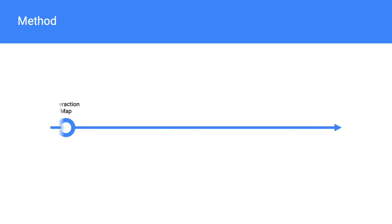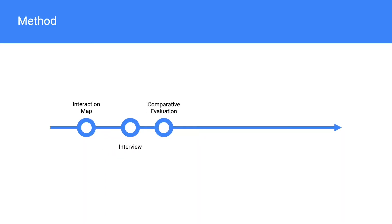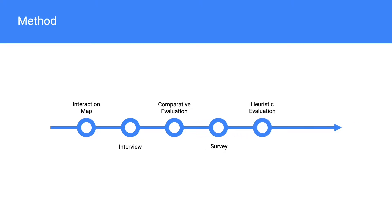First, we'll explain the methods we used. We started with an interaction map, followed by interviews, a comparative evaluation, a survey, a heuristic evaluation, and usability tests.